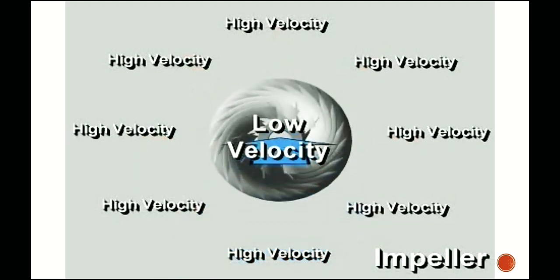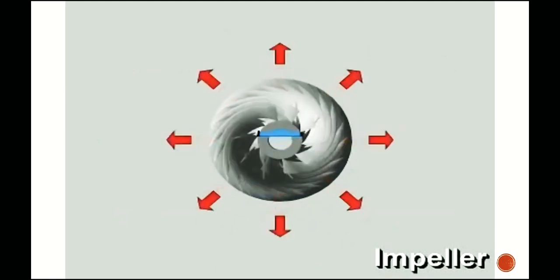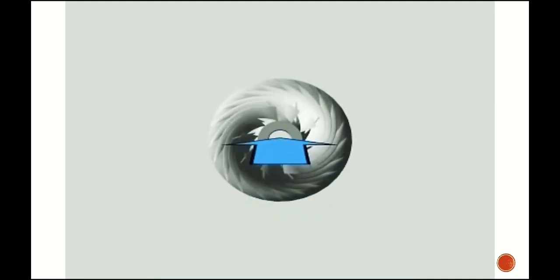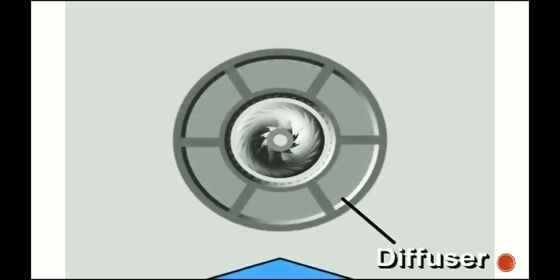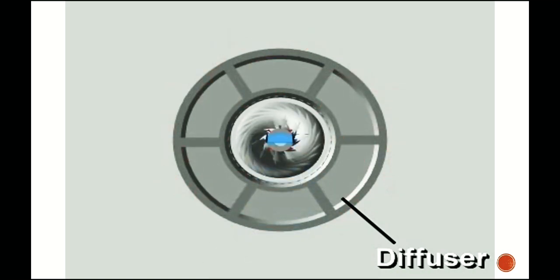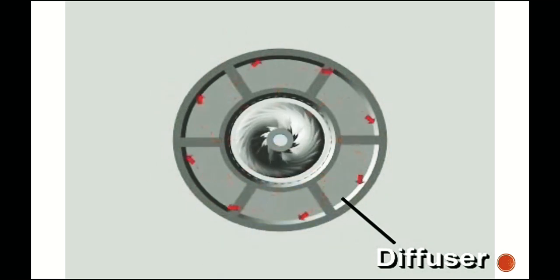The impeller transfers its rotational energy to the vapor, but high velocity does not equate to high static pressure. To achieve the desired pressure increase or compression, the vapor must be slowed down, converting its velocity pressure to static pressure. That is where the diffuser comes in. As high-velocity vapor moves radially outward through the diffuser, the flow area increases, slowing the vapor and increasing the static pressure. Some models have diffusers with vanes or pipes which change flow direction and further slow the vapor.